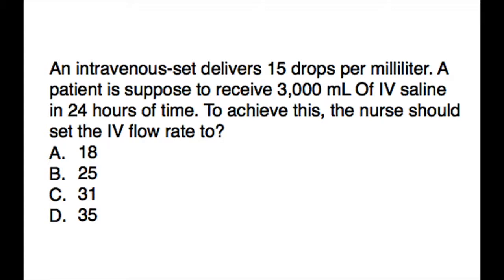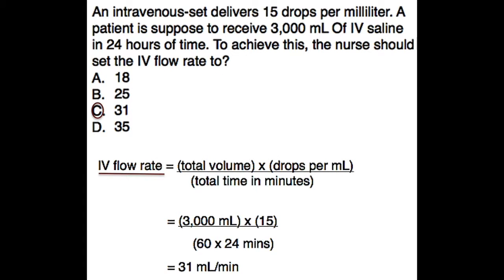All right, so the correct answer here is C, 31. IV flow rate equals total volume times the drops per milliliter divided by the total time in minutes. That is 3,000 milliliters times 15 divided by 24 hours, that is 24 times 60 minutes. When you do the calculation, you get the answer 31.